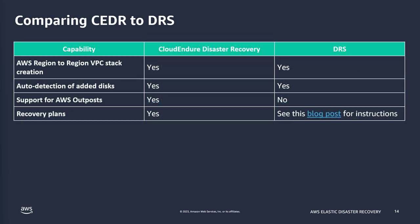Region-to-region VPC stack creation — where CloudEndure captures your VPC configuration and launches it for you in the recovery region — is also included in Elastic Disaster Recovery, as well as automatic detection of disks. AWS Outposts support is not yet available but is on the roadmap. If you are currently using CloudEndure to replicate between AWS Outposts, you should continue using that until the feature becomes available. Recovery plans are not built directly into the service yet, but there is a blog post available while that feature is being developed. Recovery plans define which servers or groups of servers you want to launch first and in what order.